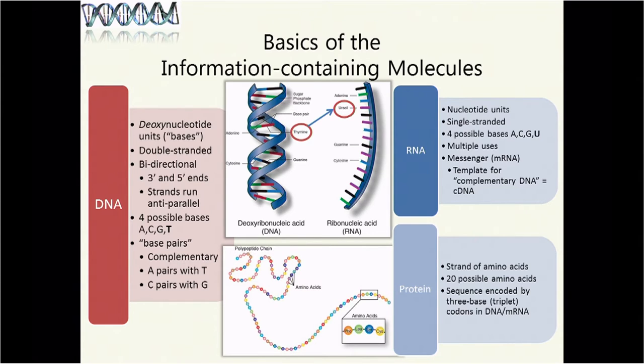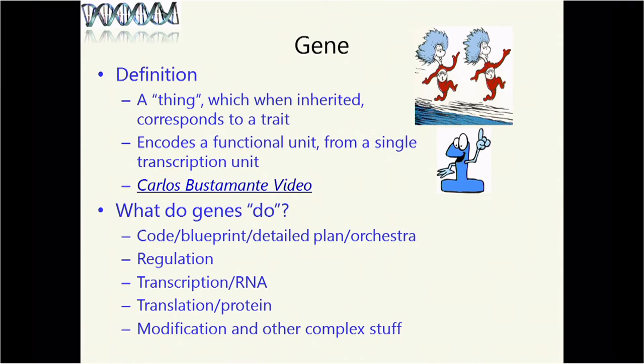Protein is a strand of amino acids. There are 20 possible amino acids, and the sequence is encoded by the triplet codons in DNA and messenger RNA. We're going from four-letter code to 20 different things in proteins. How do we do that? I'll get to that in the next slide.